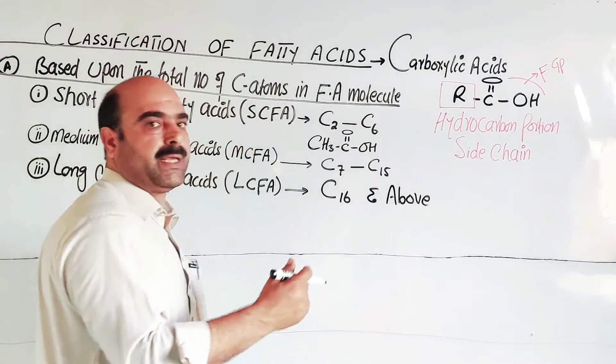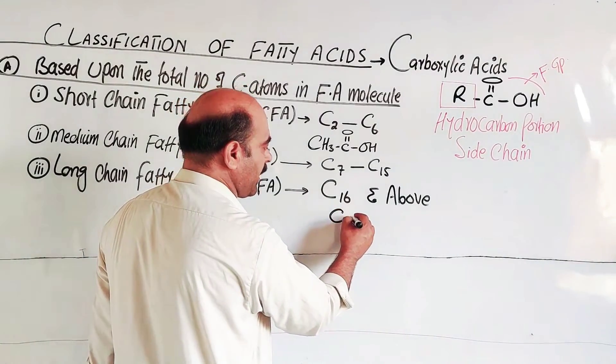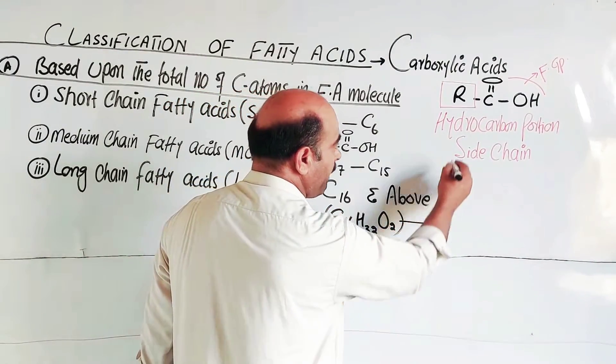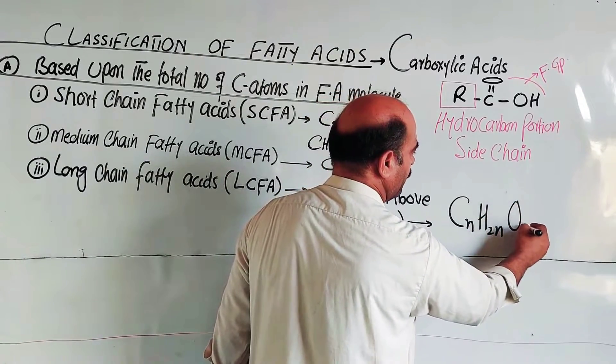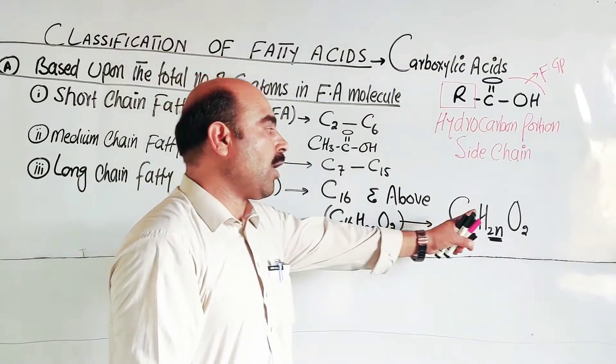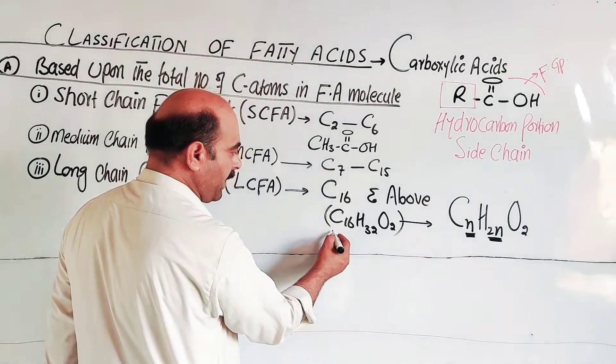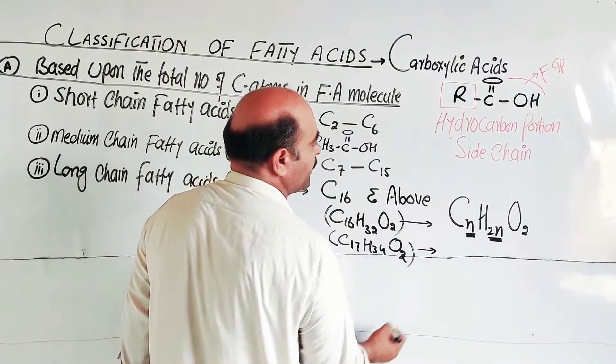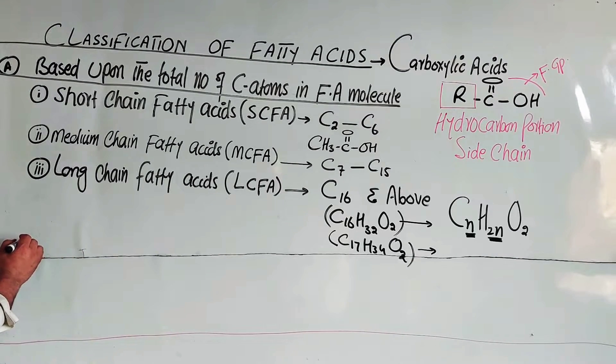For example, palmitic acid has carbon 16, stearic acid has carbon 17 and so on. Carbon 16: the general formula is C16H32O2. For stearic acid with carbon 17, hydrogen is double of N: C17H35O2. Examples include palmitic acid, stearic acid, oleic acid. This is the first classification.